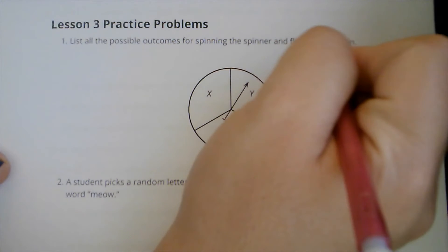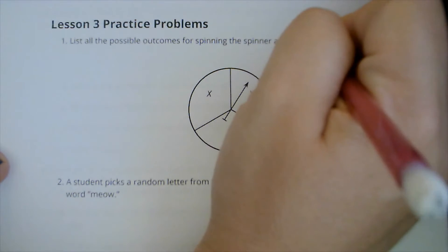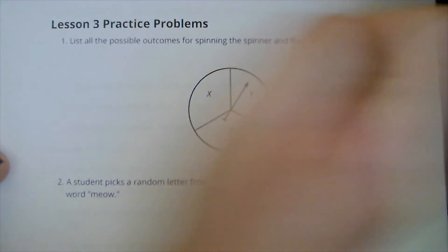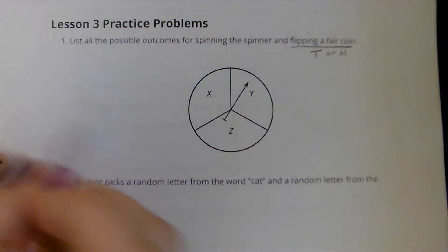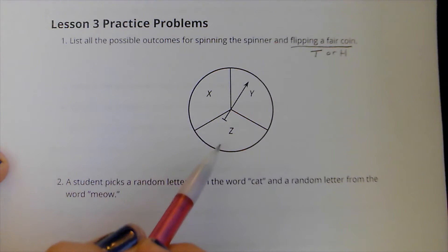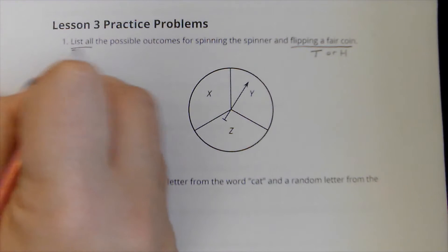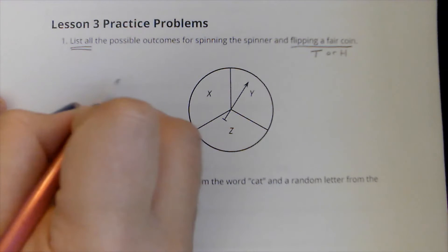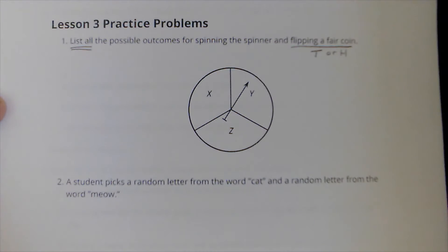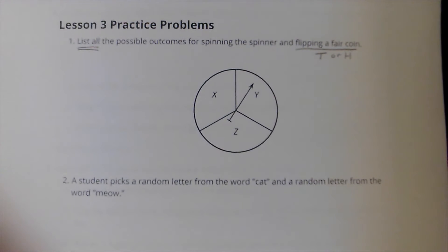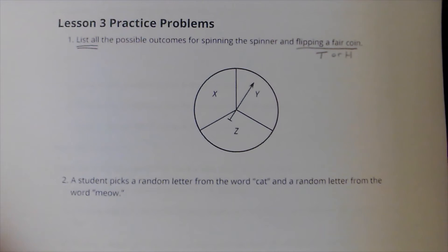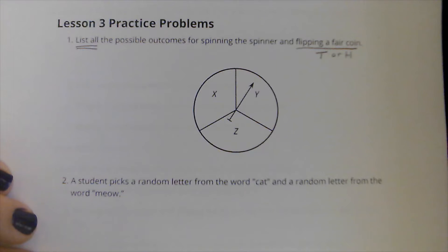First it says, list all the possible outcomes for spinning the spinner and flipping a fair coin. So remember, flipping a fair coin, we're going to have the options of tails or heads. And then spinning the spinner, I have the options of X, Y, and Z. If it says to list them all, I have to write out what the possible options are.